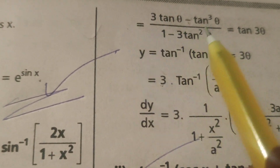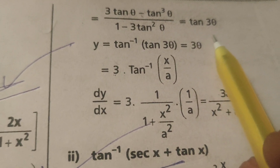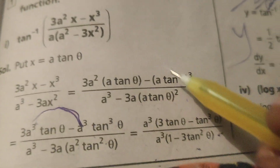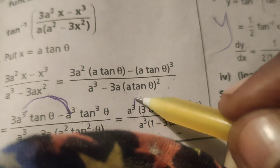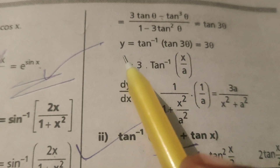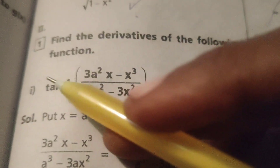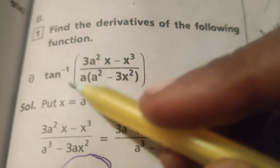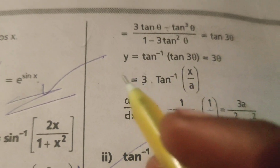After cancelling a³ from numerator and denominator, we get (3·tan θ - tan³θ) / (1 - 3·tan²θ). By the triple angle formula, this equals tan(3θ). Therefore y = tan inverse of tan(3θ).